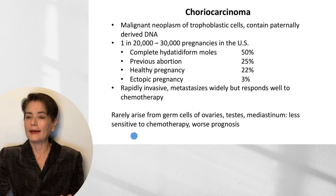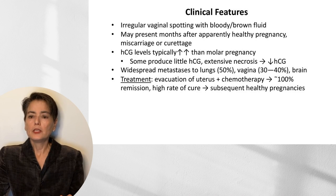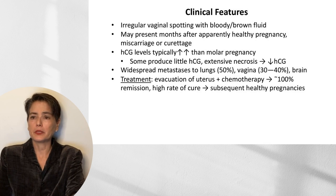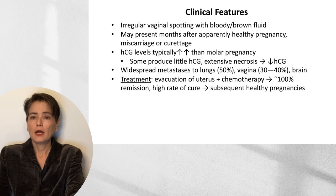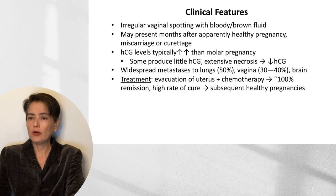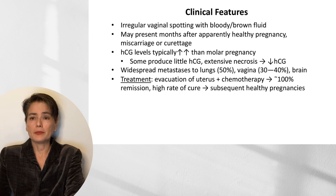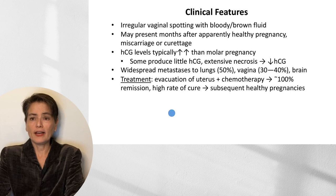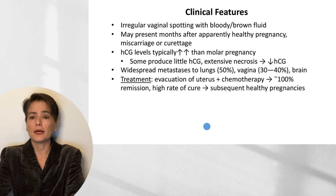Clinically, patients present with irregular vaginal spotting with a bloody brown fluid, which may appear months after an apparently healthy pregnancy, miscarriage, or curettage. HCG levels are typically much higher than even in a molar pregnancy, although some choriocarcinomas produce only a small amount of HCG, and tumors with extensive necrosis will show very low HCG. Choriocarcinoma tends to metastasize widely, most commonly to the lungs, but also to the vagina, brain, and other sites. With evacuation of the uterus and chemotherapy, there is about 100% remission, and there is also a high rate of cure with subsequent healthy pregnancies.